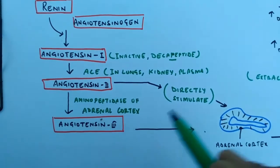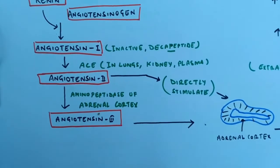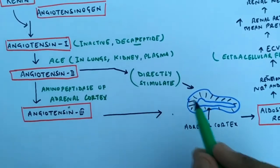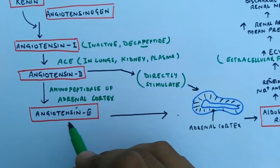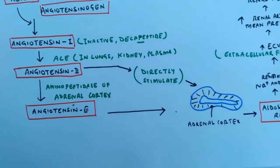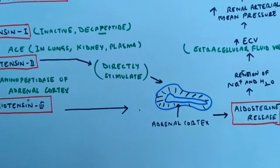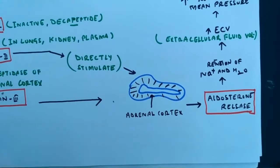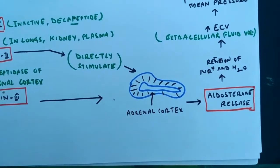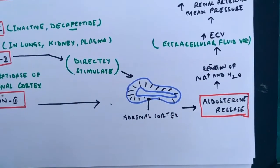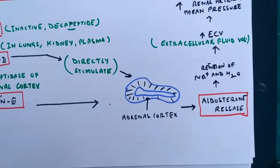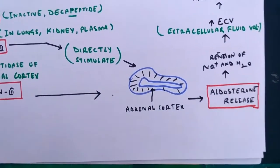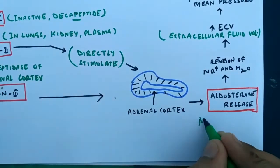Angiotensin 2 is further converted into angiotensin 3 by aminopeptidase of the adrenal cortex. Angiotensin 2 directly stimulates the adrenal cortex, and indirectly angiotensin 3 also activates the adrenal cortex. On activation of the adrenal cortex, the outermost layer — called the zona glomerulosa — is the source of aldosterone, also called a mineralocorticoid.